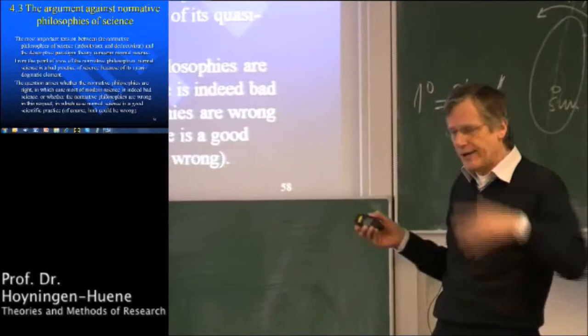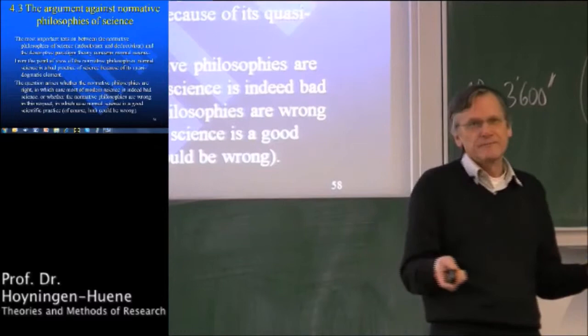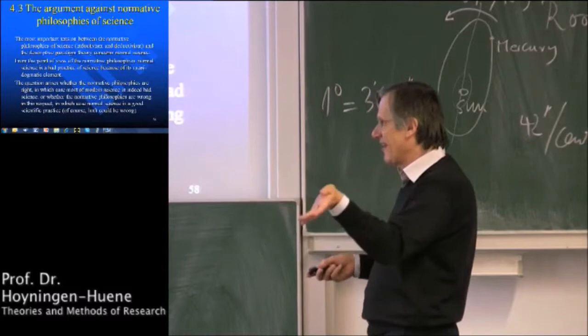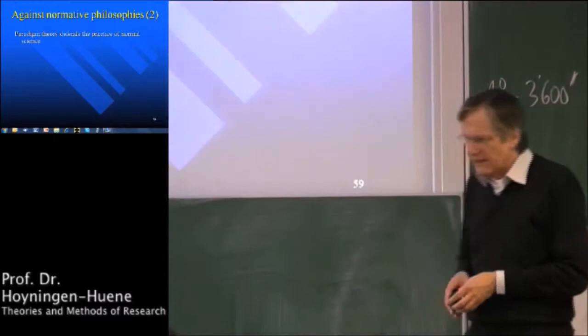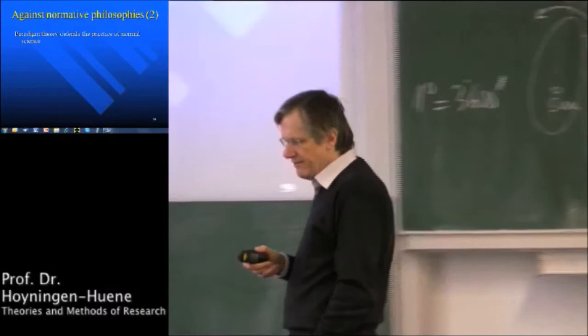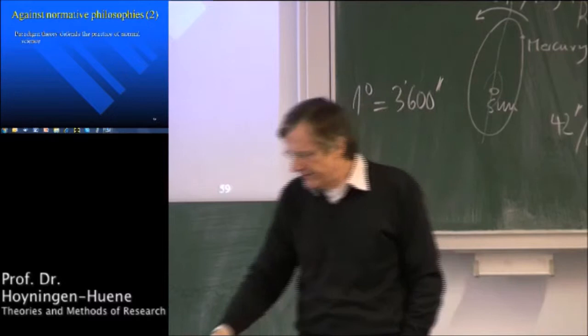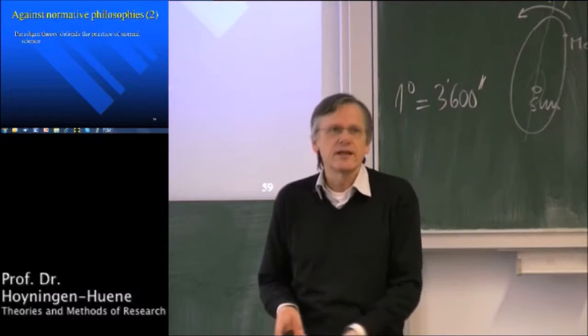That's our situation here. From the bottom of your heart you might say the scientists are right and the philosophers are wrong — but that's not an argument. Let's look for a real argument. Paradigm theory defends the practice of normal science. It says normal science is a good scientific practice, and paradigm theory claims it can show why normal science is good and why the normative philosophies of science are wrong.